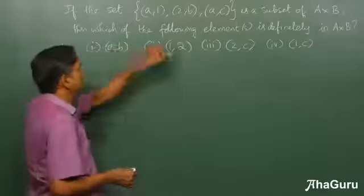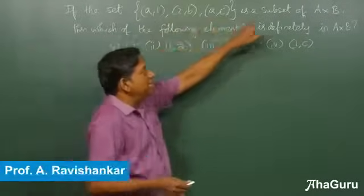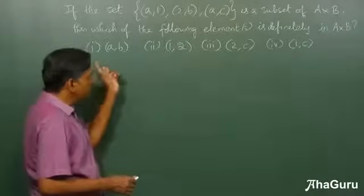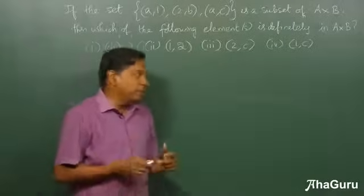Here we are told that a particular set {(a,1), (2,b), (a,c)} is a subset of A×B. Now the question is, which of the following elements must definitely be in A×B?